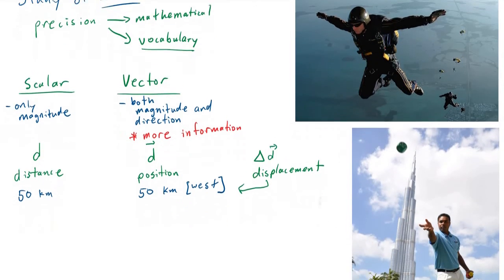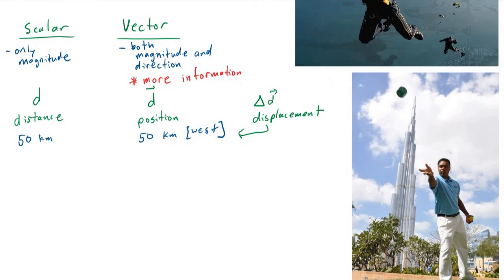Let's look at another example of a scalar and a vector. Another scalar would be speed. Speed does not have a direction. If you're traveling 90 kilometers an hour, that does not matter which direction you're going. The vector equivalent we call velocity. Velocity has to include a direction. So you can be going 90 kilometers an hour. But which direction are you going? Maybe you're going north.